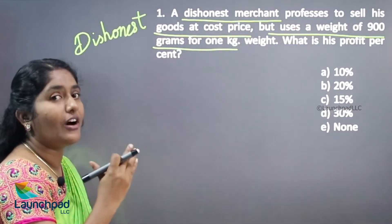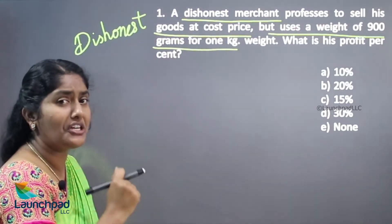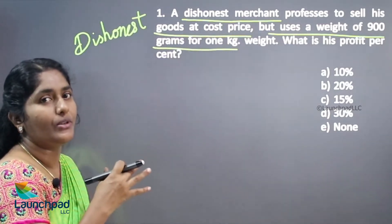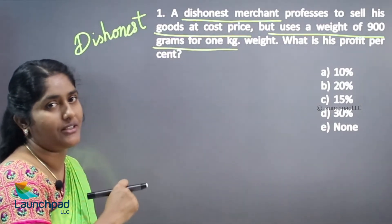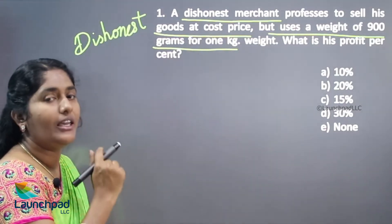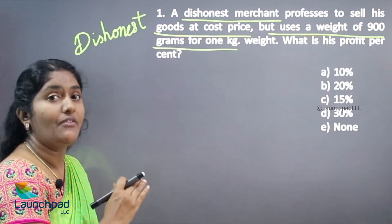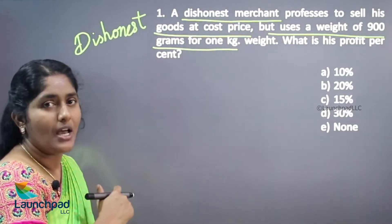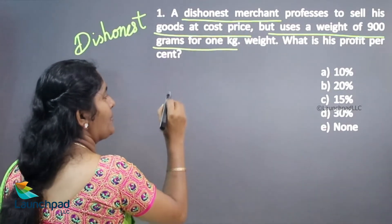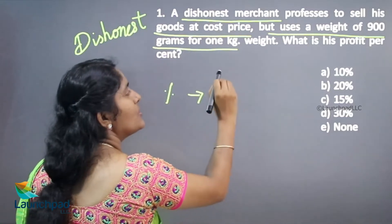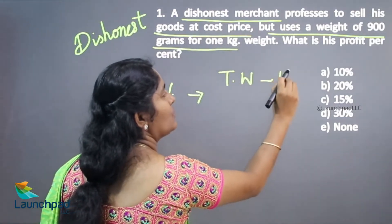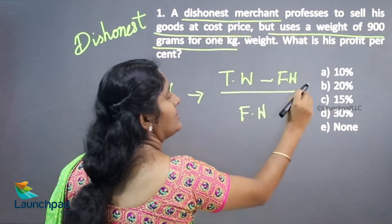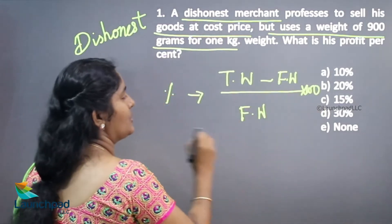Whenever you see the word dishonest, that person does not change any price values — instead, the quantity is low. They are using a false weight; it is not the actual quantity. Here is the shortcut: the person gains only the profit percentage, calculated as true weight minus false weight, divided by false weight, into 100. This is your shortcut.